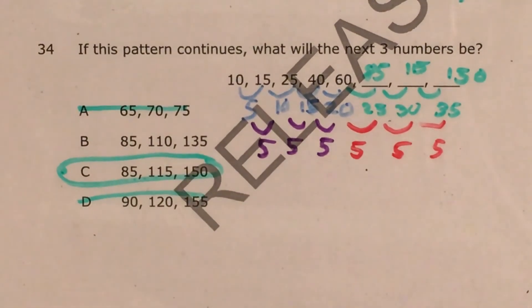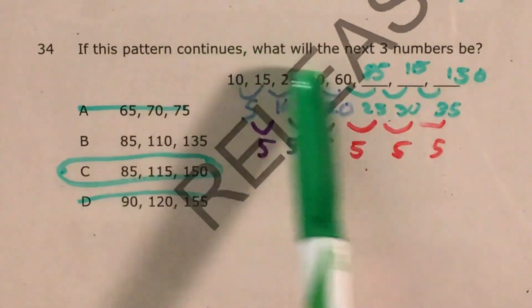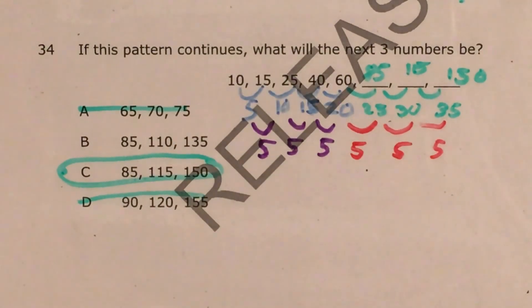And so choice C is our answer. Now again, this question, you have to look for a pattern, and then you also have to keep looking for patterns, even if you have already tried a whole bunch of different things. Because we had to find a pattern within a pattern. We had to figure out that we were adding the same thing to the numbers that we were adding every time we wanted to get to the next typed number.